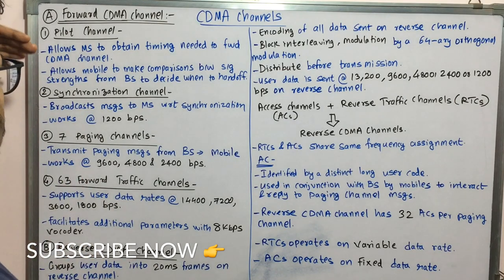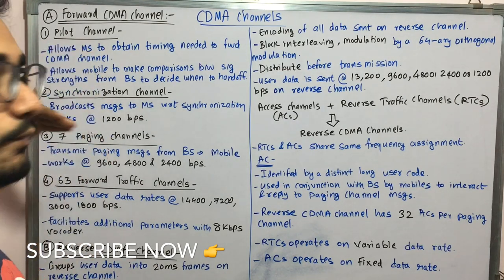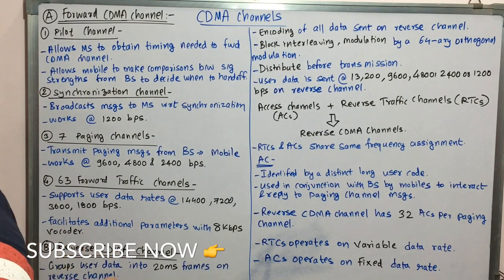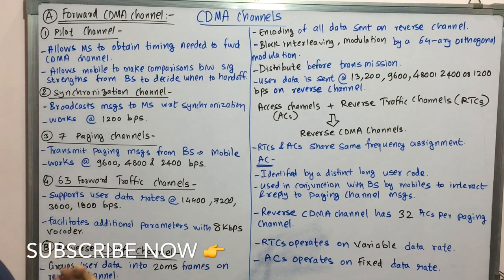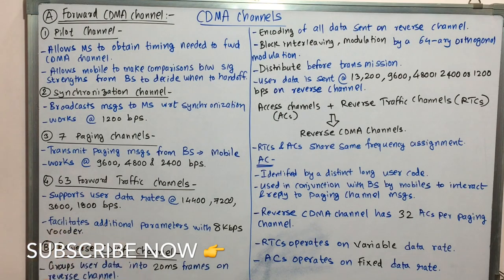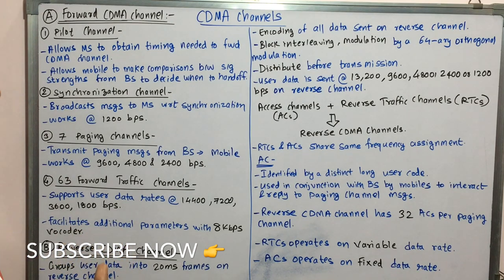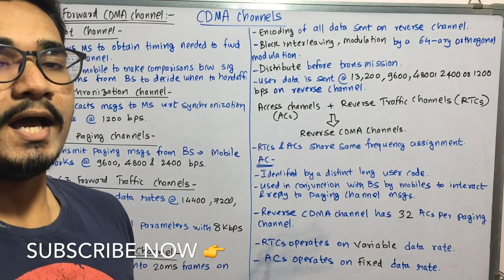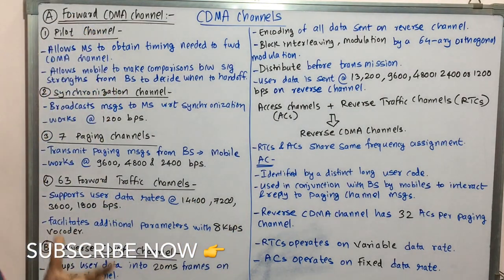The first channel that CDMA has is the forward CDMA channel, and it has four sub-channels inside it. The very first one is the pilot channel. It allows the mobile station to obtain timing information needed for the forward CDMA channel. It also allows the mobile to make comparisons between different signal strengths so that the base station can initiate or ascertain a handoff as and when required.